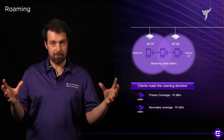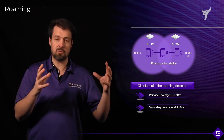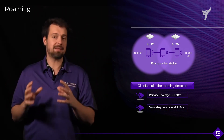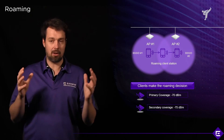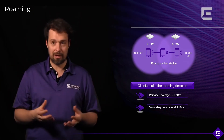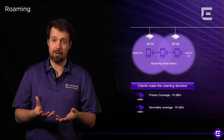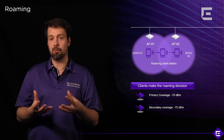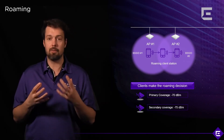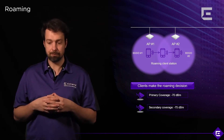This is a very simple scenario. As we move from coverage-based to more capacity-based designs, these cells will shrink, which means you need more APs, you need to be more careful with the design, and eventually also try to leverage dual 5 GHz APs to make sure these things work out as needed.